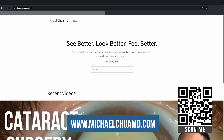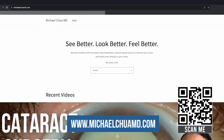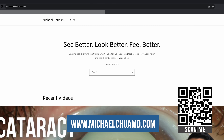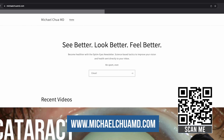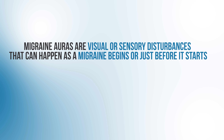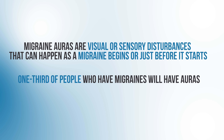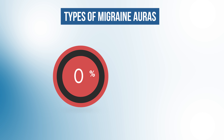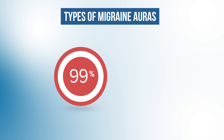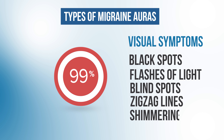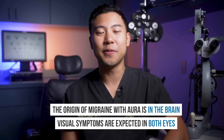Now let's cover migraine auras. Migraine auras are visual or sensory disturbances that can happen as a migraine begins or just before it starts. About one-third of people who have migraines will have auras. Up to 99% of patients who have migraine with aura report visual symptoms, including black spots, flashes of light, blind spots, zigzagging lines, or shimmering shapes. Since the origin of migraine with aura is in the brain, we expect to see these visual symptoms in both eyes.